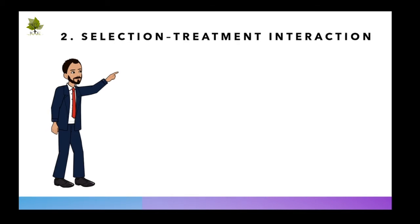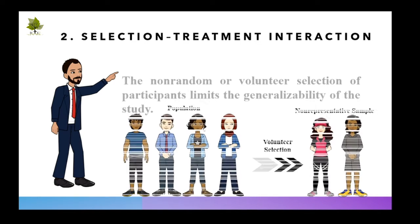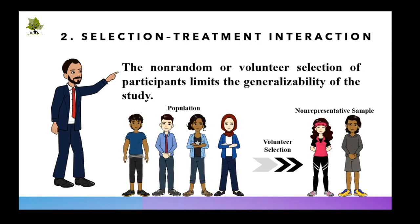Selection treatment interaction is defined as the non-random or volunteer selection of participants that limits the generalizability of the study. Selection treatment interaction, another threat to population validity, occurs when study findings apply only to the non-representative groups involved and are not representative of the treatment effect in the extended population.